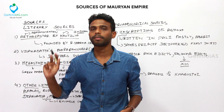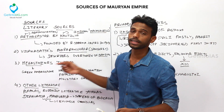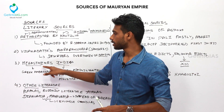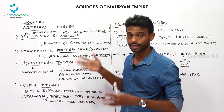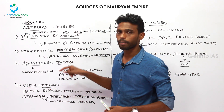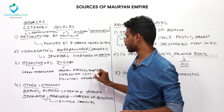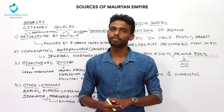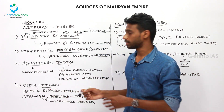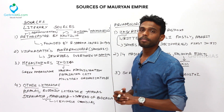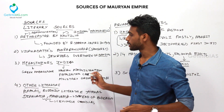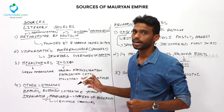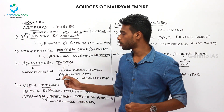Next is Megasthenes' Indica. Megasthenes was a Greek ambassador, and as mentioned in the reconstructing the past lesson, this is an important literary source as it gives a clear view of Chandragupta Maurya's empire. Megasthenes was sent as a Greek ambassador to India during the period of Chandragupta Maurya, and he gave a clear view of the Mauryan administration as well as the strategic position of Pataliputra city. Pataliputra became the capital of the Mauryan Empire. The Indica deals mostly with military conquest, administration, and the strategic position of Pataliputra city.